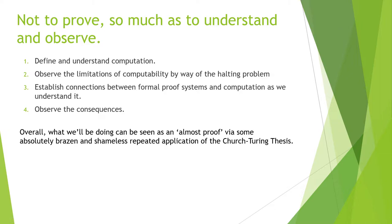The plan is not to prove so much as understand and observe, but nonetheless what we're going to be doing sort of looks like a proof. I've been calling it a proof by absolutely shameless and brazen repeated application of the Church-Turing thesis. Obviously we'll have to talk about what the Church-Turing thesis actually is. But the overall plan, I can make it four steps essentially. One is define and understand computation. That's going to be a big chunk of this. Two, observe the limitations of computability by way of the halting problem. Three, establish connections between formal proof systems and computation as we understand it. And then four, observe the consequences. At that point we will have a house of cards that if we pull one of them immediately, the whole thing collapses. And that collapse is pretty satisfying.